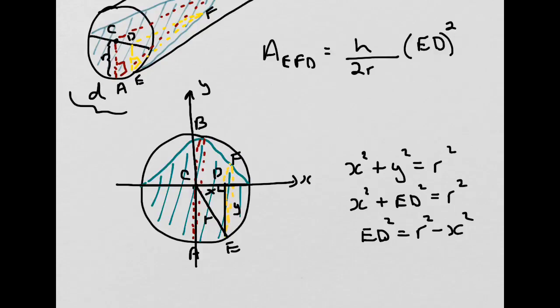And what we end up with is a relationship between the distance ED, the constant r, and x.